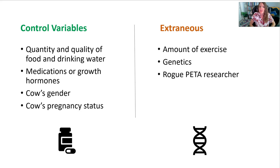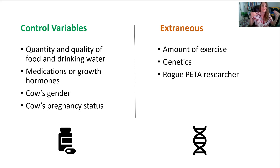Control variables could include the quantity and quality of other food and drinking water — are both groups eating and drinking the same amounts? Do they receive the same medications or growth hormones? Cow gender matters too — female cows likely produce more milk than male cows. And cows that have just had a baby will produce more. Making sure all these factors that could change the outcome are controlled for — those are your control variables.